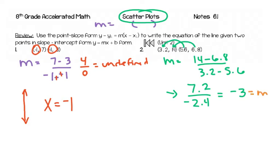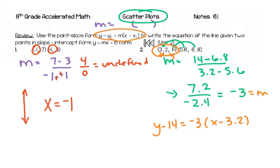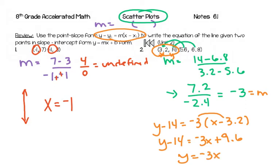Since I know my slope is negative 3, I'm going to choose one of my points — it doesn't matter which. I've got x sub 1 and y sub 1, so: y minus y sub 1 equals m times x minus x sub 1. Simplifying: y minus 14 equals negative 3x, and negative 3 times negative 3.2 is positive 9.6. Then add 14 to both sides to get slope-intercept form, which gives me 23.6.